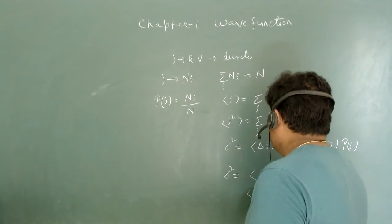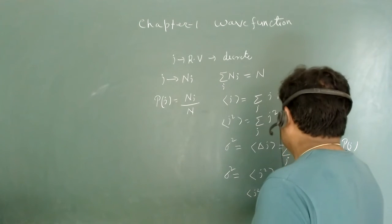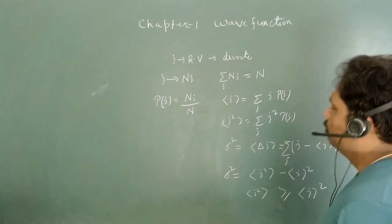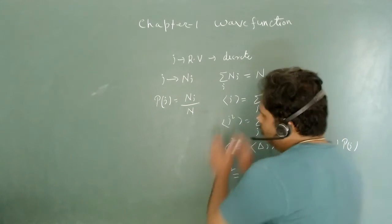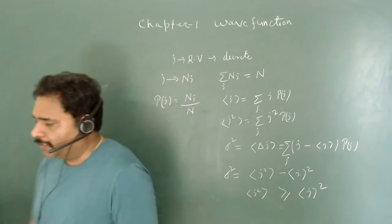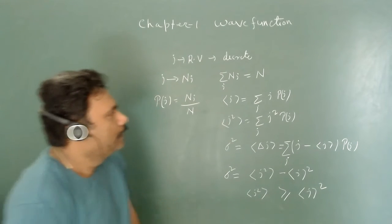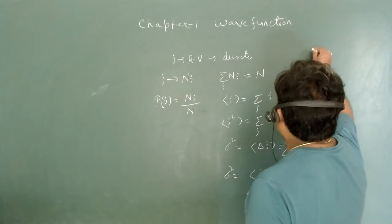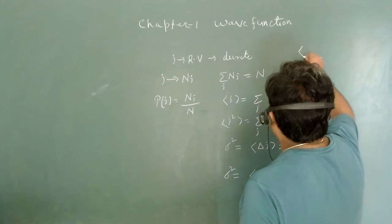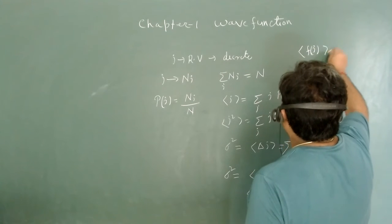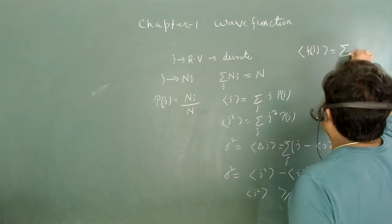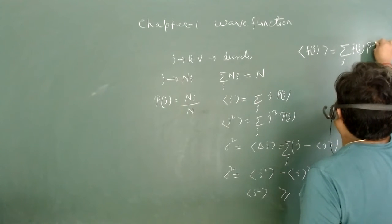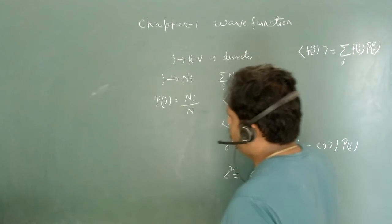We can also see that ⟨J²⟩ should be greater than ⟨J⟩². If this holds, then J is confirmed as a random variable. For any function F(J), the expectation value is given by ⟨F(J)⟩ = Σ F(J)·P(J). This is all about the discrete variable.